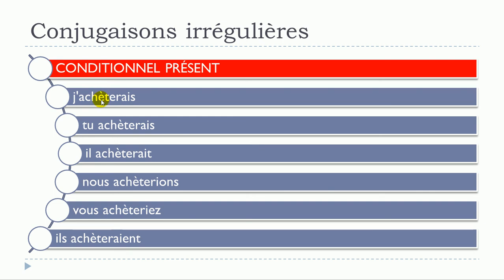For the Conditionnel Présent, all forms are also affected: j'achèterais, tu achèterais, il achèterait, nous achèterions, vous achèteriez, ils achèteraient.